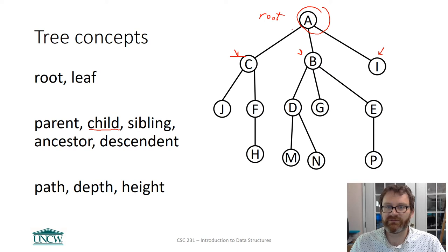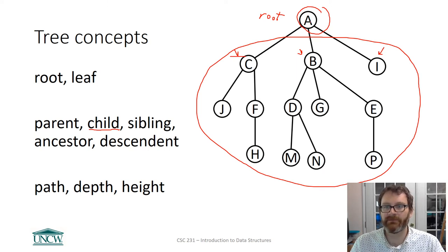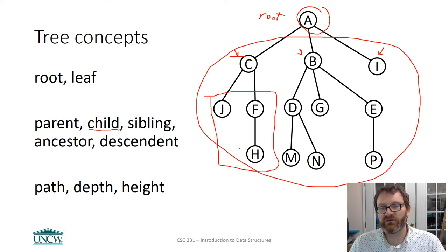So A's children are C, B, and I. And furthermore, A is the parent of C, B, and I. Collectively, though, let's say that we're looking at everybody down here. We can say that everybody down here are descendants of A. Everybody down here is a descendant of A. Who's the descendants of C? Well, the descendants of C are this group here. So descendants all have a common ancestor. In this case, it's C.